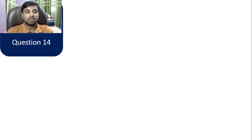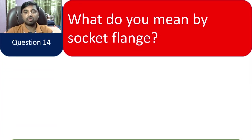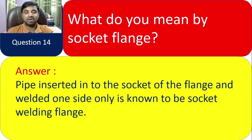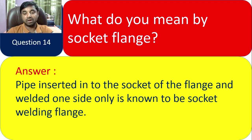Question 14: What do you mean by socket flange? A socket flange is one where the pipe is inserted into the socket of the flange and welded on one side only. The pipe goes into the larger socket and you weld only on the outside — you cannot do welding on the inside. This is known as the socket weld flange.